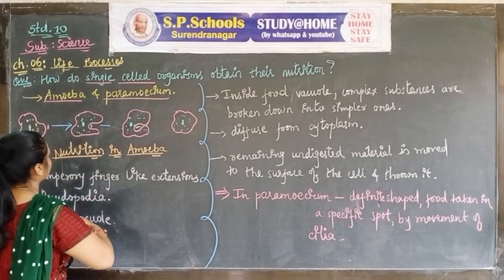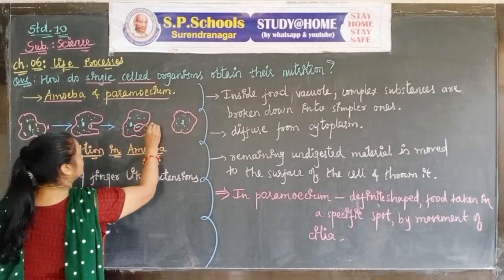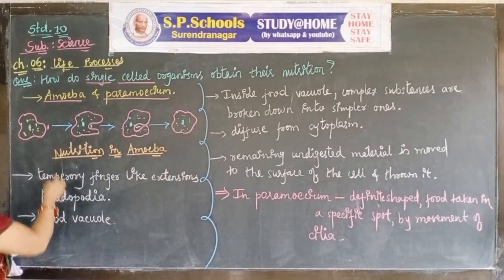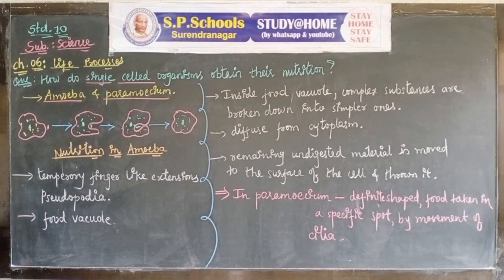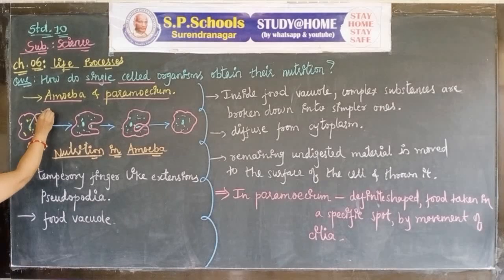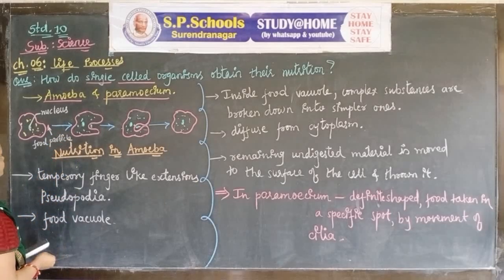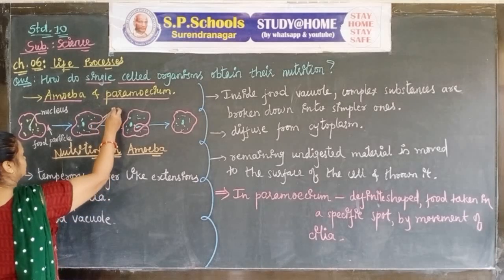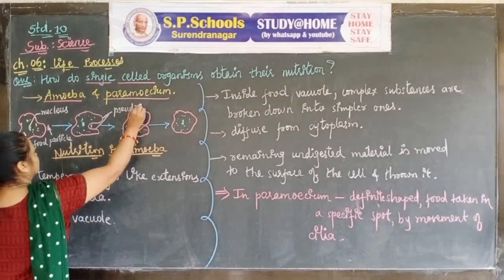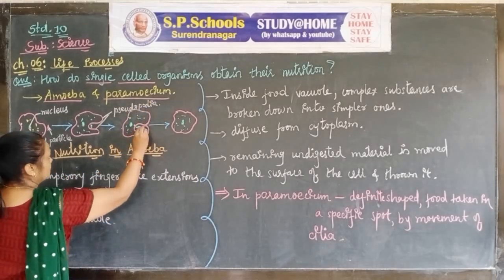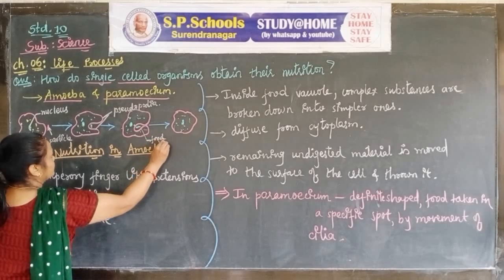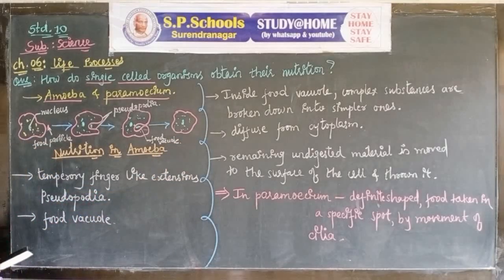Amoeba is an irregular-shaped organism. In the diagram of amoeba, we show the nucleus and a food particle outside the body. Amoeba shows its nutrition process in steps. The first step involves the formation of pseudopodia — temporary finger-like extensions formed outside the body.